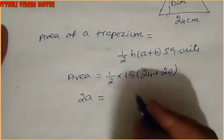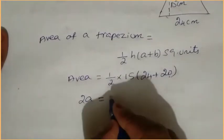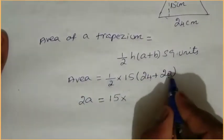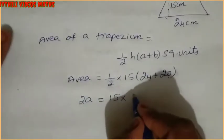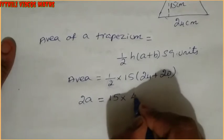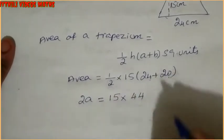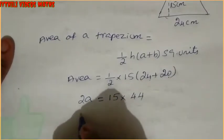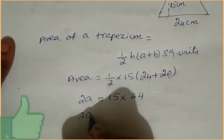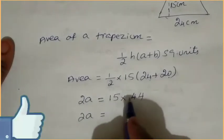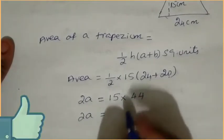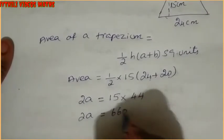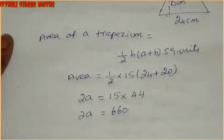So 2A equals 15 into (24 plus 20). 24 plus 20 equals 44. Now 2A equals 15 into 44, multiply — that gives 660.